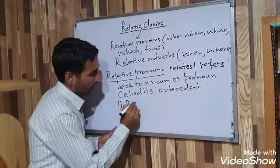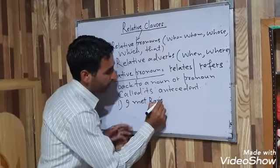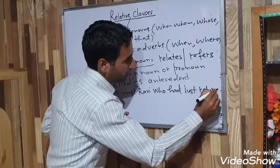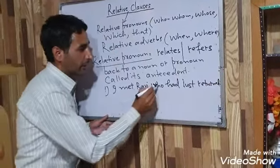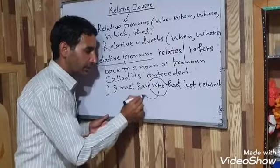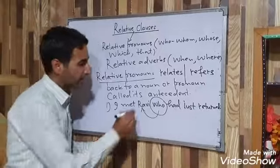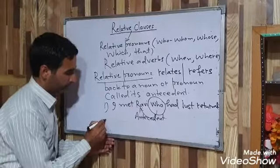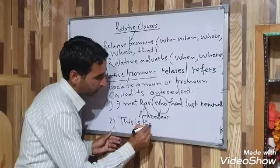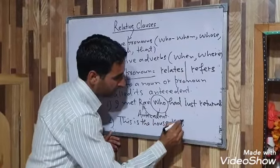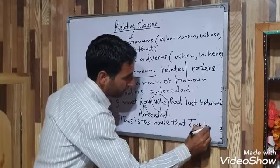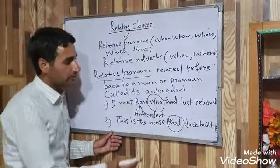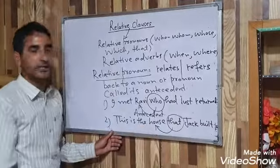For example: 'I met a man who had just returned.' The Relative Pronoun is 'who' because it relates or refers back to a noun — the noun is 'man,' and 'man' is the antecedent. Another example: 'This is the house that Jack built.' The Relative Pronoun is 'that' and it refers back to the noun 'house,' which is the antecedent.